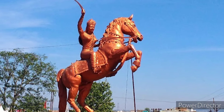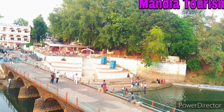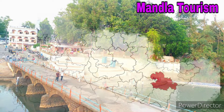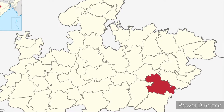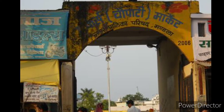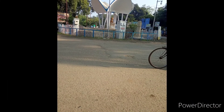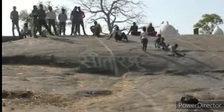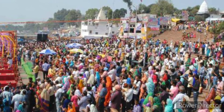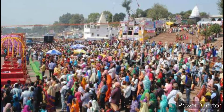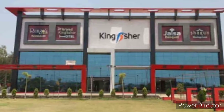According to the 2011 census, Mandala District has a population of 10,54,904, roughly equal to the nation of Cyprus. Its population growth rate over the decade 2001 to 2011 was 17.81%. Scheduled Castes and Scheduled Tribes make up 4.69% and 57.88% of the population respectively. Gond are the largest Scheduled Tribe with over 50% of the district population.